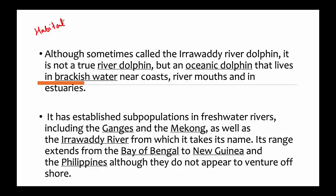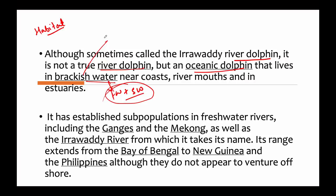Regarding their habitat — although sometimes called a river dolphin, that would be a misnomer. This is not a river dolphin but an oceanic dolphin that lives in brackish water, where freshwater and seawater combine. Brackish water has more salt than freshwater and less salt than seawater. They are found mostly in lagoon lakes like Chilika Lake.